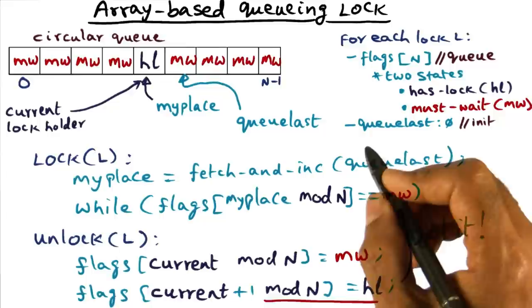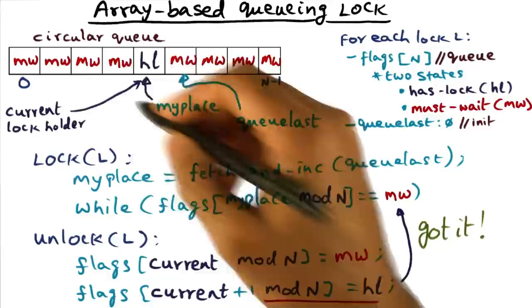So if you have a large scale multiprocessor with thousands of processors, that can start eating into the memory space. So that's something that you have to watch out for. So the space can be a big overhead.